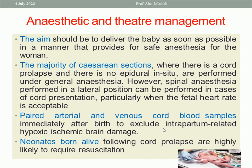What about anaesthetic management? The aim should be to deliver the baby as soon as possible, using anaesthesia that is safe for both mother and fetus. The majority of caesarean sections for cord prolapse are performed under general anaesthesia if no epidural was previously sited. General anaesthesia is better, unless epidural anaesthesia was used during early labour, in which case caesarean section can continue using regional anaesthesia.